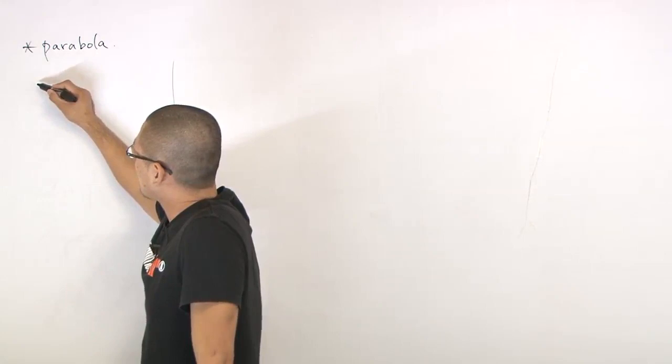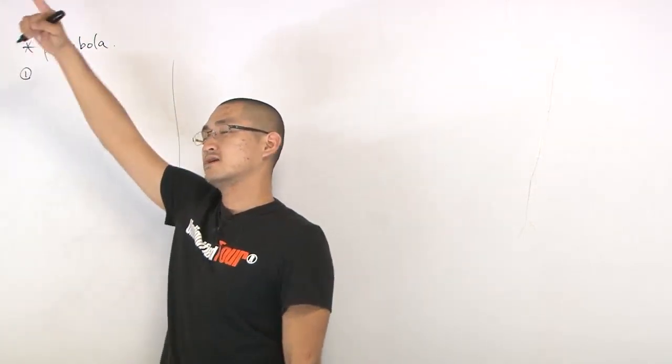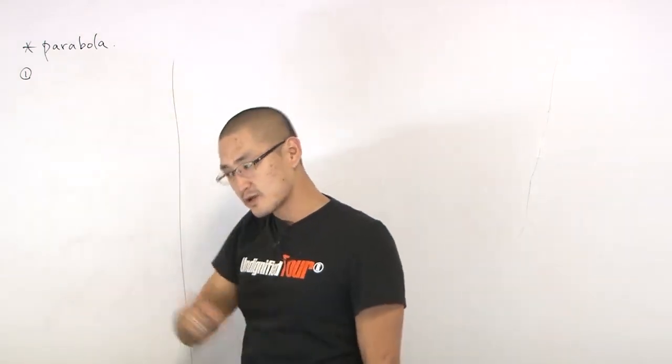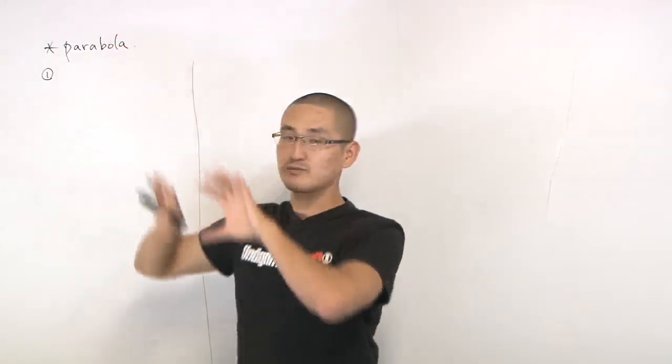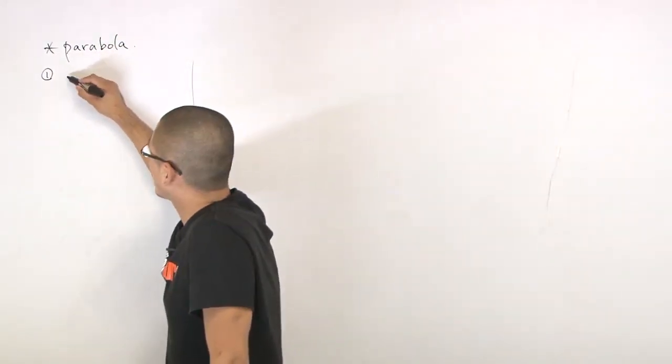So parabola we could write it this way. There's two cases where you have it going up this way or down this way or that way. You know the y spreading shape or x spreading shape. So first case is the one that we're used to. We're gonna write it as...